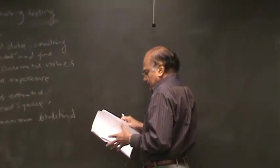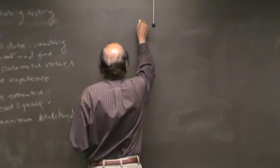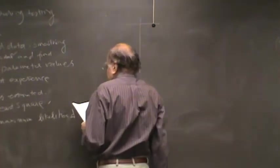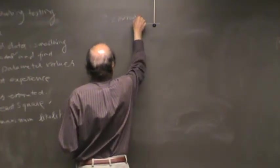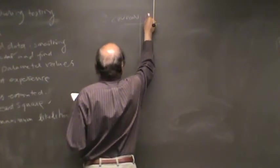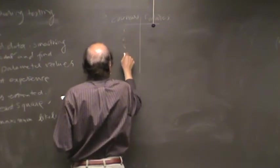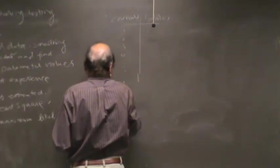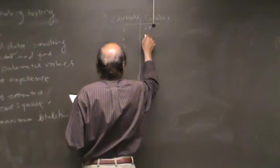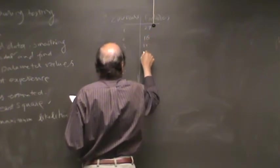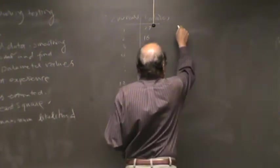So it works this way. You have some data. Here you have CPU hours, and I'm giving you an example. Failures: one, two, three, four... twelve. And here you have twenty-seven failures in the first hour, then sixteen, eleven, ten — some numbers like this.